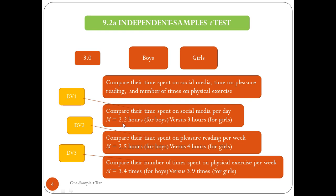We want to find out whether girls significantly spend more time on social media than boys. The difference is almost one hour, but this difference could happen by chance. We cannot simply look at the means of two groups and conclude that girls spend more time on social media. We need to perform inferential statistics — specifically an independent samples t-test — in order to draw a valid conclusion on this dependent variable.